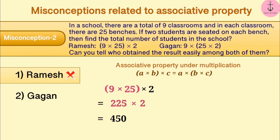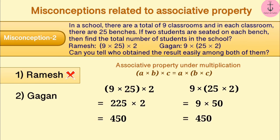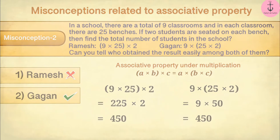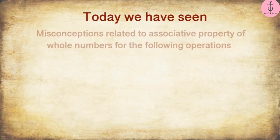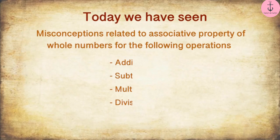But this can be solved very easily with the associative property of multiplication. One can find the product of 25 × 2 = 50 very easily. Then multiplying 9 × 50 gives 450, which is also easy to obtain. Therefore, Gagan must have found the result easily and not Ramesh. Today we have seen misconceptions related to associative property of whole numbers for the following operations.